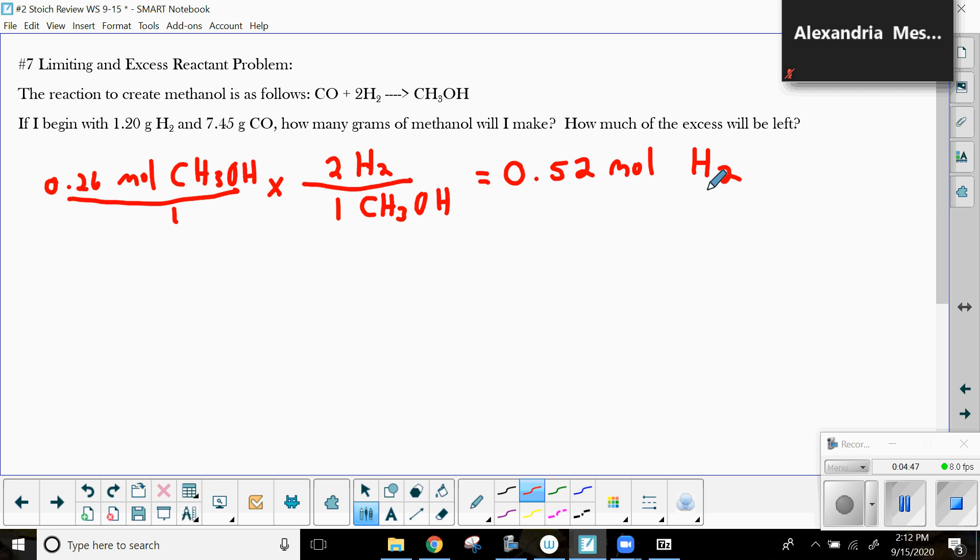Now I've got to figure out how much I started with. So to figure out how much I started with, I go back and I say 1.20 grams of hydrogen, times that by 1 mole being 2 grams. And I started with 0.60 moles of hydrogen. So, this is going to be used. This is going to be start. So, started with 0.6, ended with 0.52.